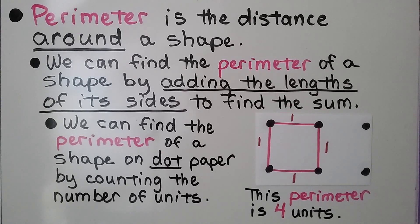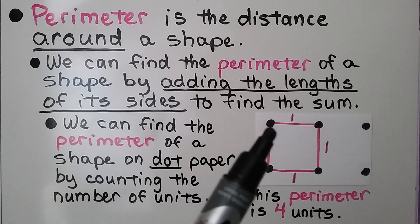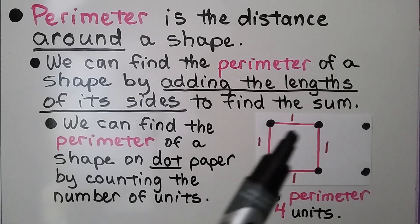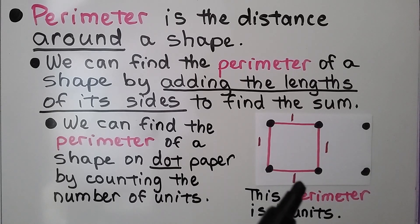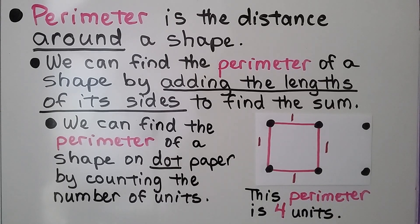We can find the perimeter of a shape on dot paper by counting the number of units. So we're going to count the units in between these dots. We have one, two, three, four. So this perimeter is four units.